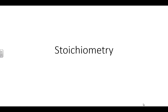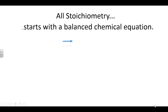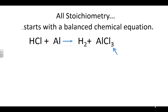Hello, men and women of science. This is Mr. Cochran here with the last video on stoichiometry, and this last video is going to cover calculations involving limiting and excess reactants in chemical reactions. All stoichiometry, including limiting reactant problems, starts with the balanced equation, and the one we'll use for examples is the single replacement reaction between hydrochloric acid and aluminum.